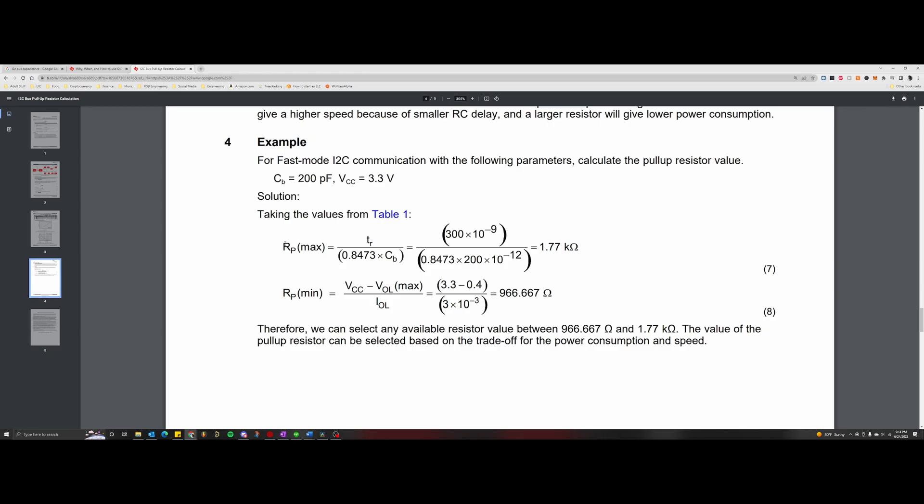Then for the minimum bound for our pull-up resistor, we just plug in the same equation we found earlier in the specification sheet. So we have VCC which is equal to 3.3 volts minus the V output low max which as we mentioned earlier is going to be approximated to be 0.4 volts, and then the maximum sink current on an I2C bus is going to be 3 milliamps. So you have 3 times 10 to the negative third. Run this calculation and you get a value of 966.667 ohms for your minimum pull-up resistor value.